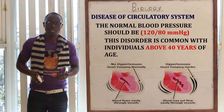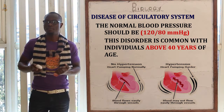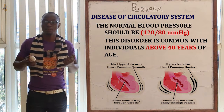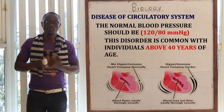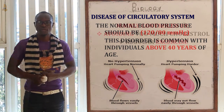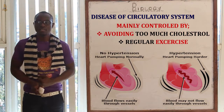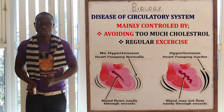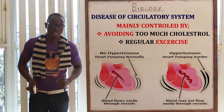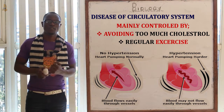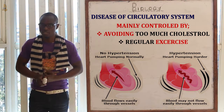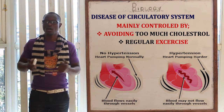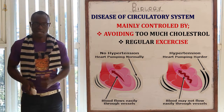High blood pressure causes destruction of many vital organs in the body such as the brain, the heart, or the liver. This disease may be controlled by avoiding too much cholesterol in the diet, regular exercise, and avoiding too much fatty foods. We will meet in the next class to discuss more on the blood.